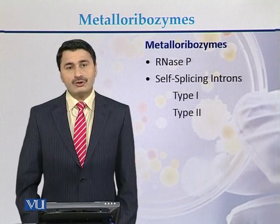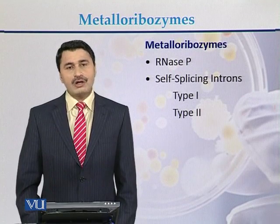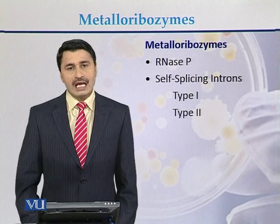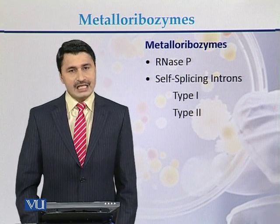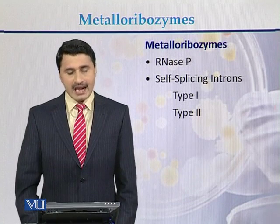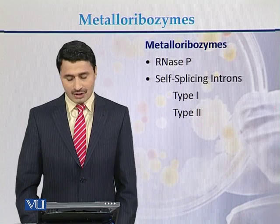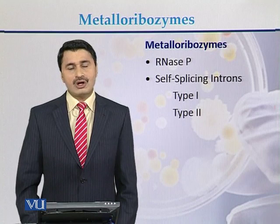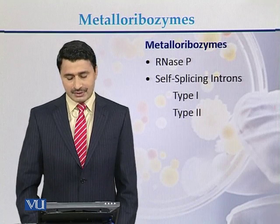To conclude, metalloribozymes are of two types: RNase P and self-splicing introns. Self-splicing introns are again of two types, belonging to group 1 and group 2.